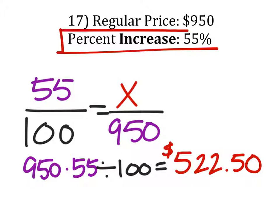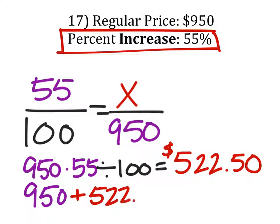This is the amount it increased. So we've got to take that $950 that we had originally and add this $522.50.